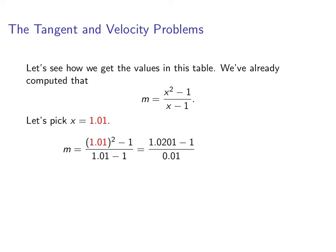And if we multiply everything out and work out what the number is, we end up with 2.01. If you go back to the table that I had created, you'll see that that was the entry for the slope corresponding to the x value of 1.01.